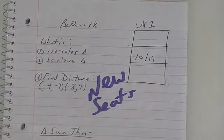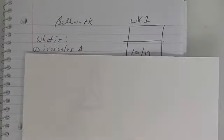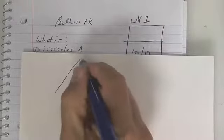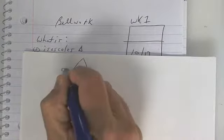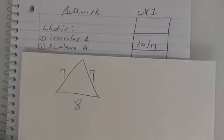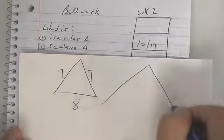Isosceles triangle means that two sides are equal. So what you want to do, I would just draw a diagram where two sides are the same. A scalene triangle, none of them are the same. So put 3, 4, 5.